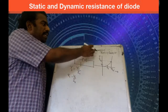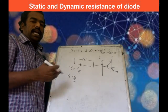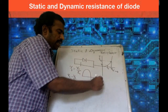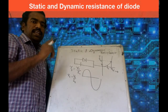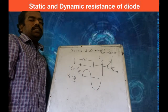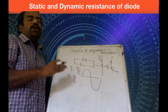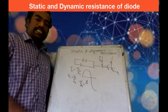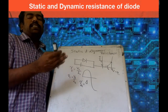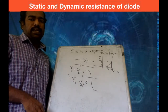Next, we learn what dynamic resistance is. Dynamic resistance applies when you connect an AC source to the diode. When an AC source is connected, the diode alternately conducts in the forward and reverse directions. The resistance offered in this case is called dynamic resistance or AC resistance. AC resistance is defined as the ratio of change in voltage to change in current — that is, delta V divided by delta I.